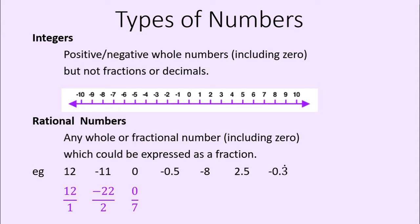So, for example, zero divided by 7. Negative 0.5 — I hope we know this decimal value very well by now. It's a negative fraction, and you should know that negative 0.5 is the same thing as negative one half. Negative 8, again, we could write it as negative 8 over 1.